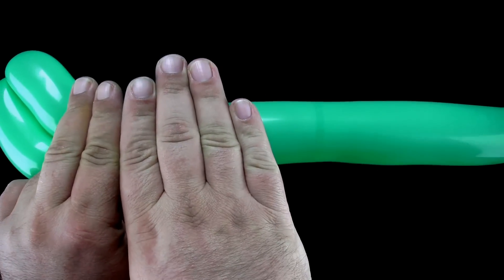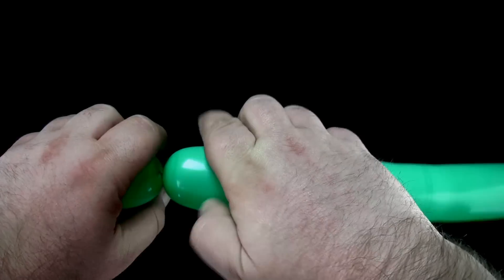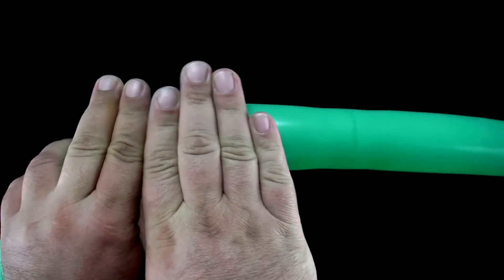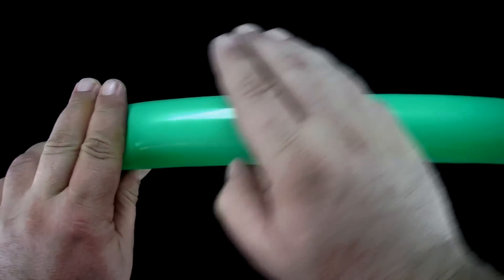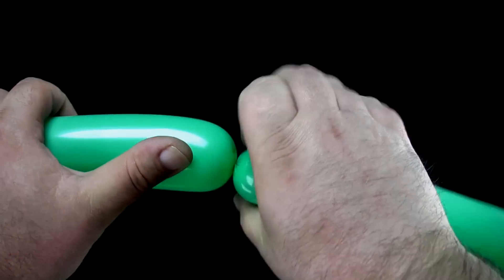Now twist a six finger bubble. Twist the second six finger bubble and lock twist both six finger bubbles together.